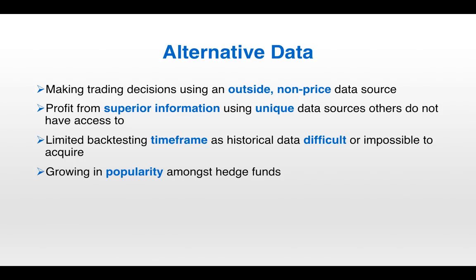Finally, we have alternative data trading strategies. These strategies make trading decisions using an outside, non-price data source — many times it's proprietary and unique, and others don't have access to it. The idea is that you have this special source of information and can use it to trade. The problem is that many times this data didn't even exist five years ago, and even if it did, it's very difficult and expensive to acquire. So alternative data strategies are difficult to backtest over a long timeframe. Nonetheless, if you have data that no one else has and it is predictive of where the market is going, that is of course extremely valuable, and as such these strategies have been growing in popularity amongst hedge funds.